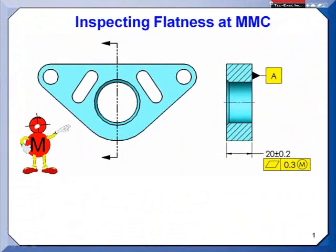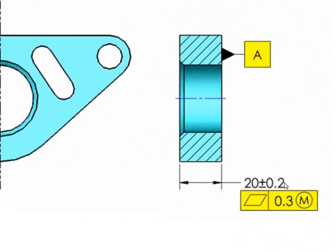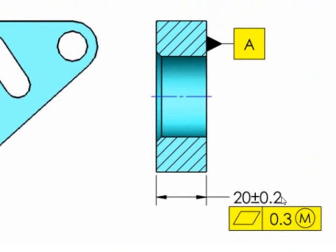Prior to the 2009 revision of the Y14.5 standard, the control I'm about to show you was accomplished by using straightness associated with the size dimension. But as of 2009, we use flatness, and it does make a lot more sense.